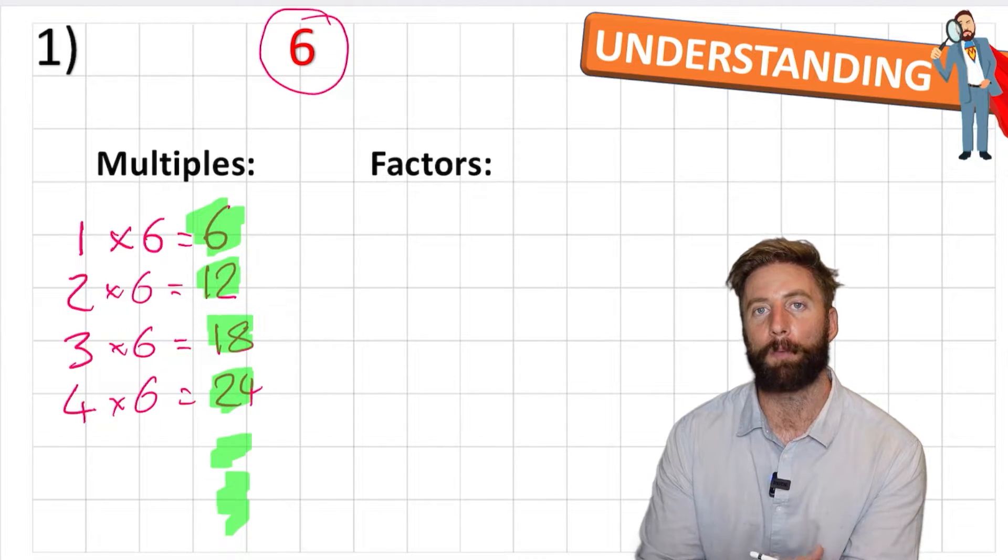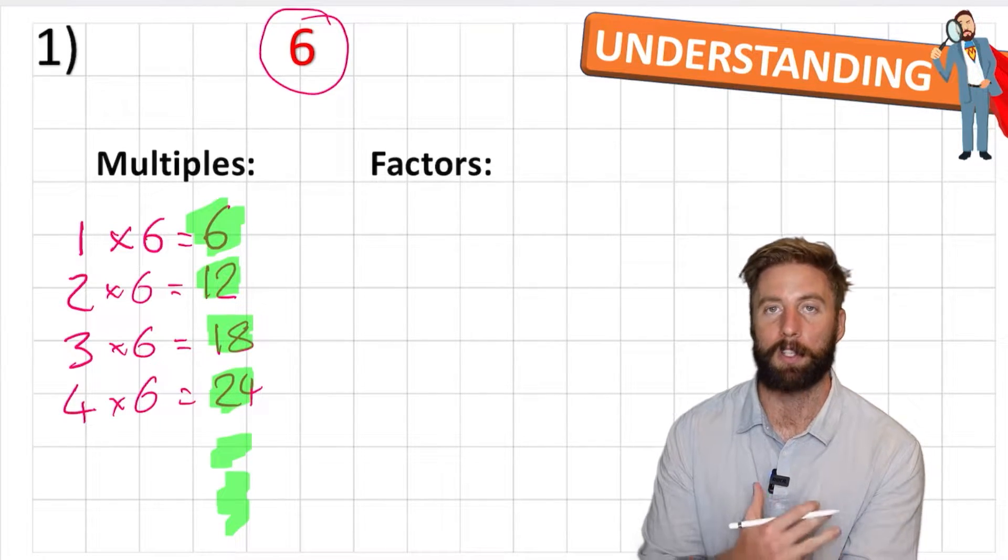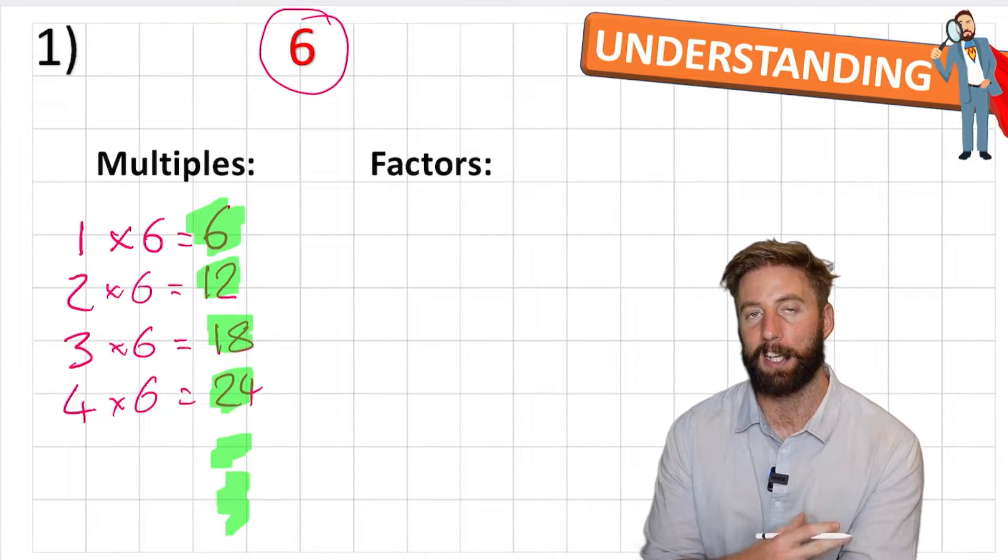So you're essentially saying what numbers would be in the 6 times table: 6, 12, 18, 24, 30, 36, etc.